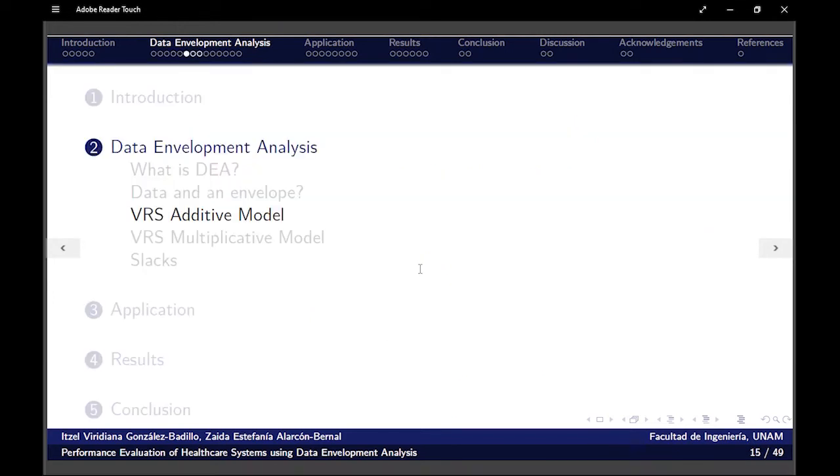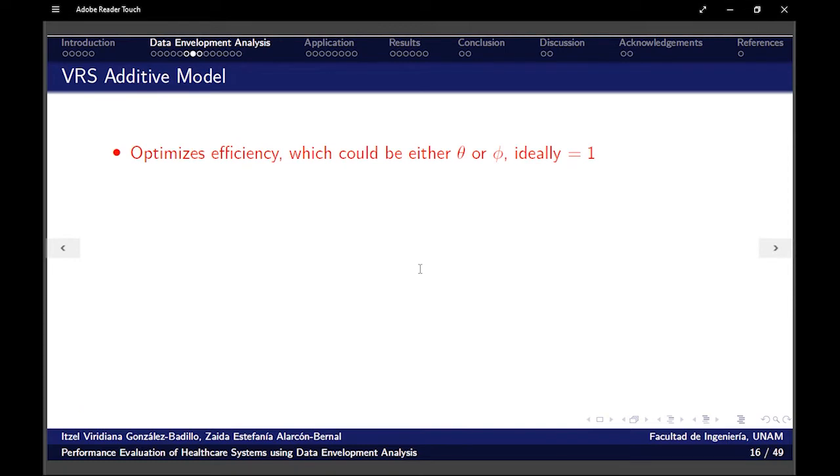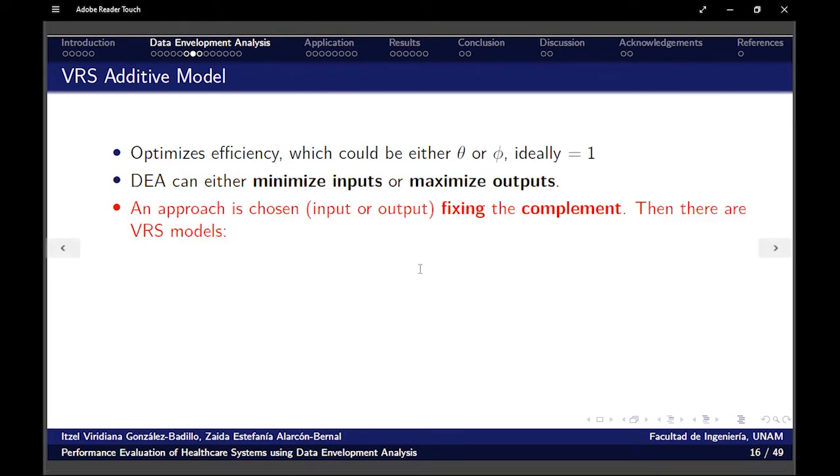So we're going to talk about three models. The first one will be the additive VRS. It optimizes the efficiency, which could be either theta or phi. Ideally, that efficiency could be equal to one. And we can either minimize inputs, minimize the quantity of resources that I'm going to use, or maximize outputs, maximize what I can do.